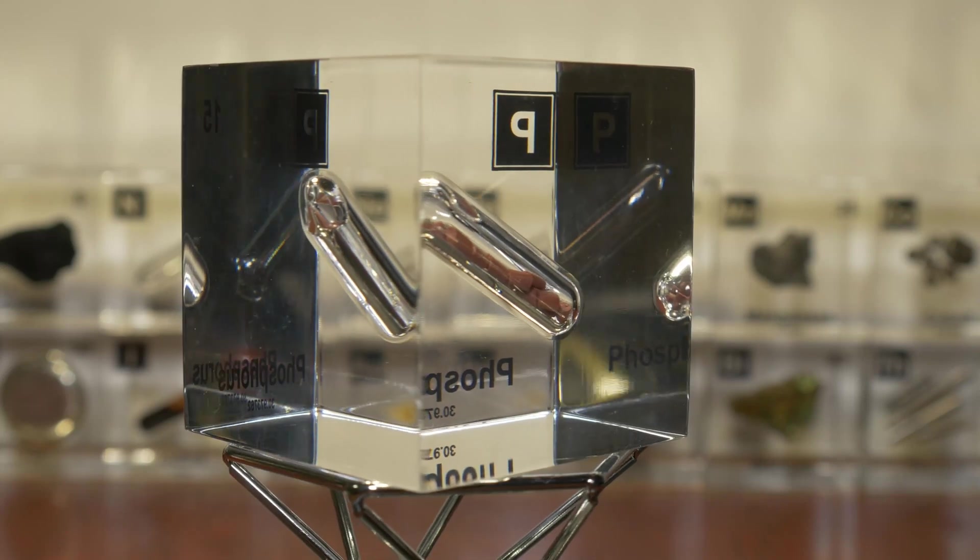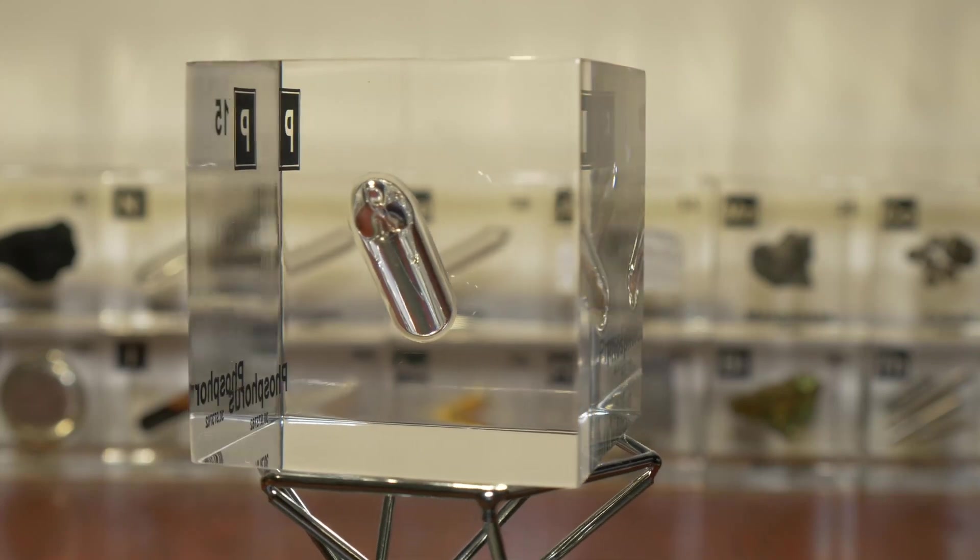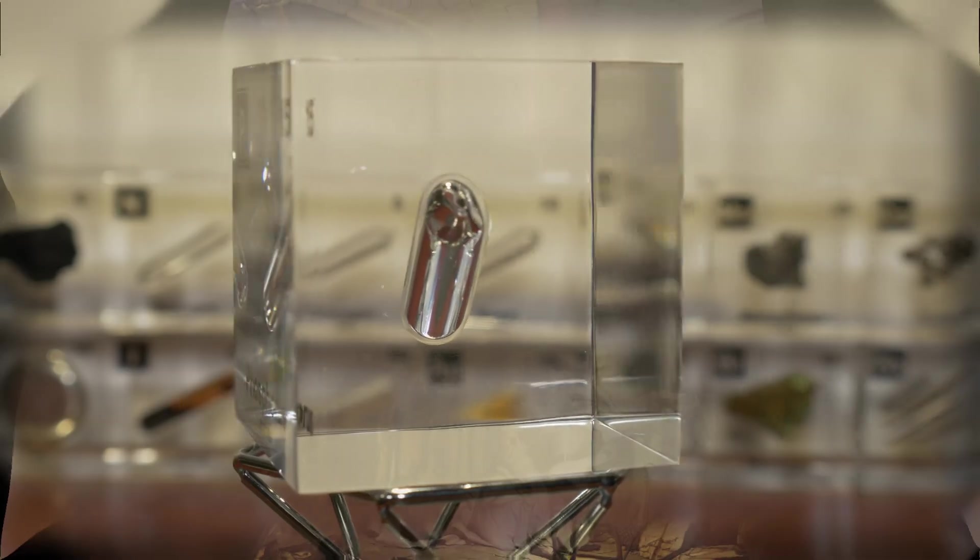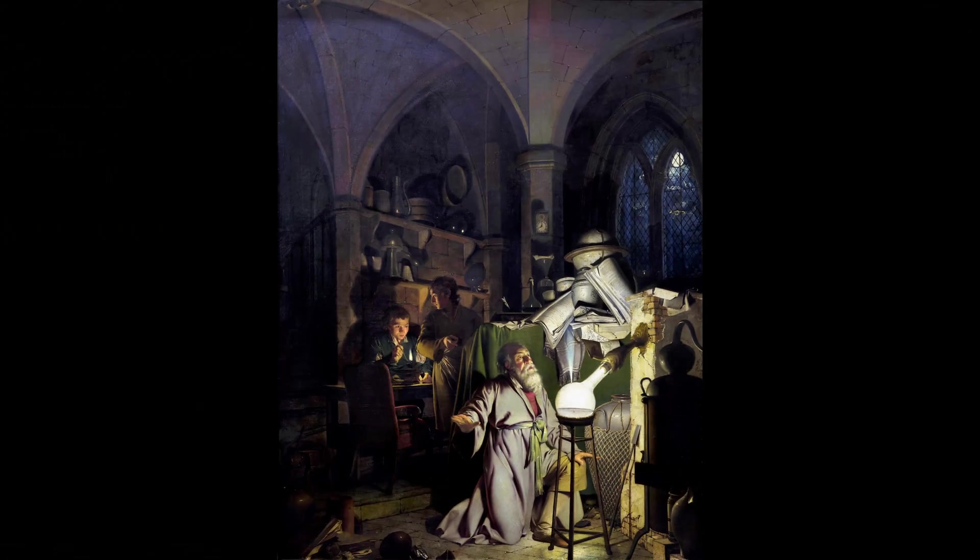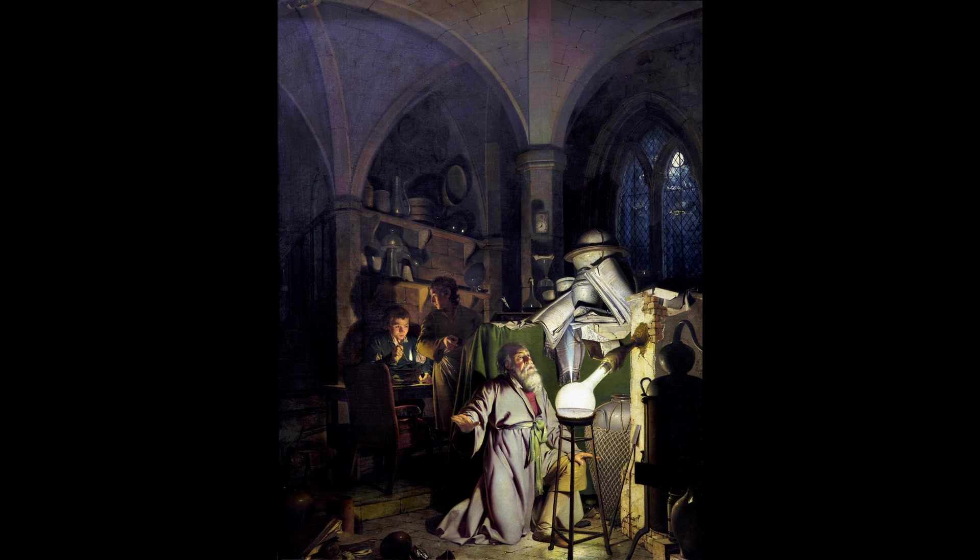Now the story of phosphorus begins in 1669 with German alchemist named Henning Brandt. Now knowing that phosphorus is highly flammable and knowing that in Dutch brandt means fire, it is a funny coincidence that this man discovered the element.